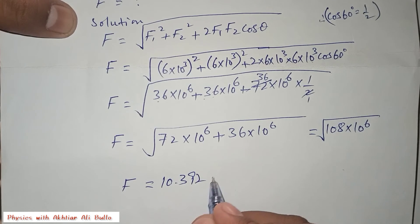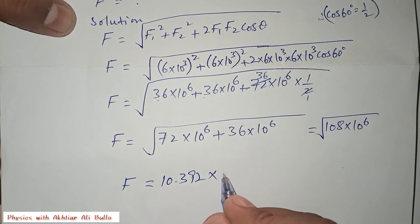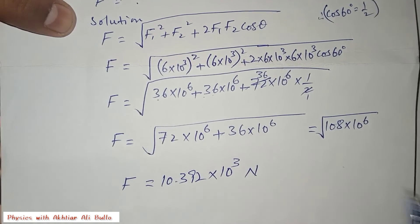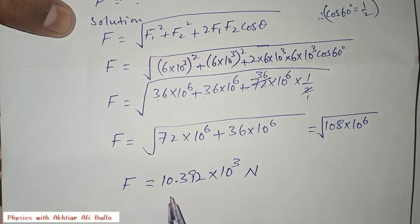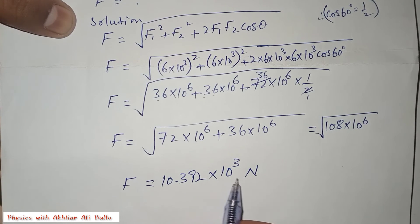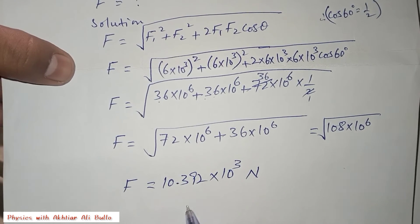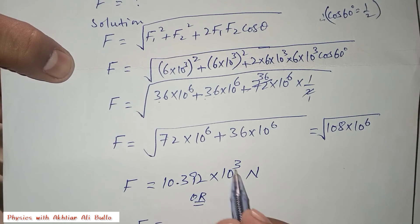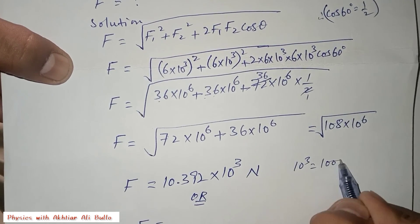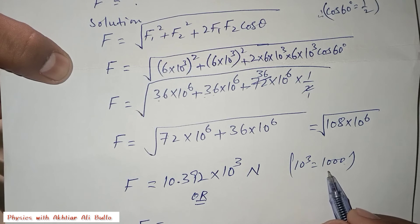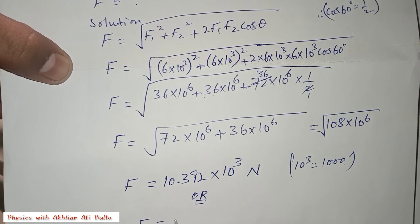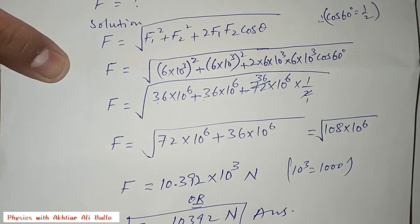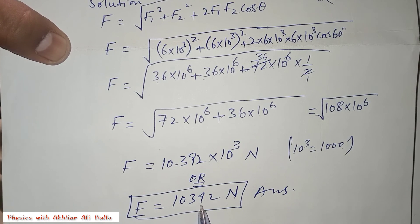Taking the square root: √108 ≈ 10.392 and √(10⁶) = 10³. So the magnitude of the resultant force is 10.392 × 10³ Newtons. Multiplying out, since 10³ = 1000, we get 10,392 Newtons. Therefore, the required answer is 10,392 Newtons.